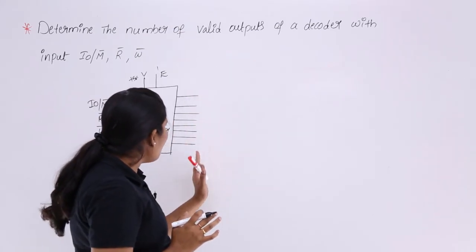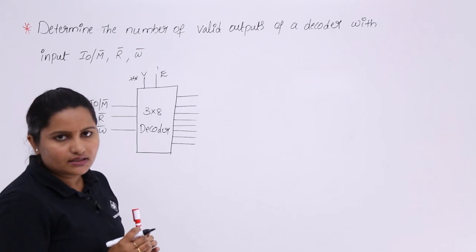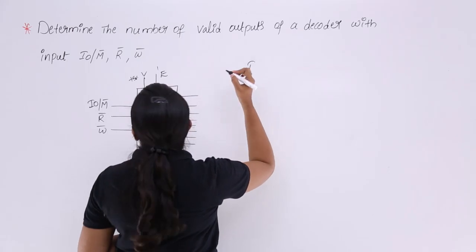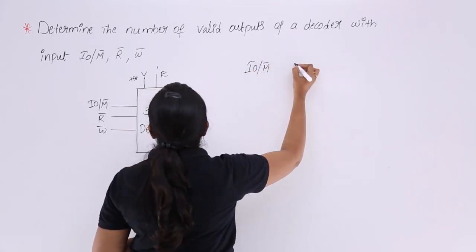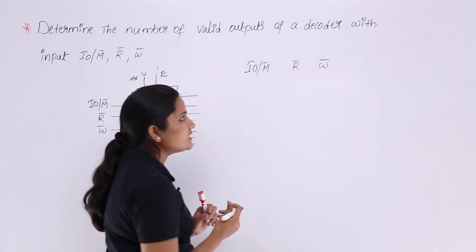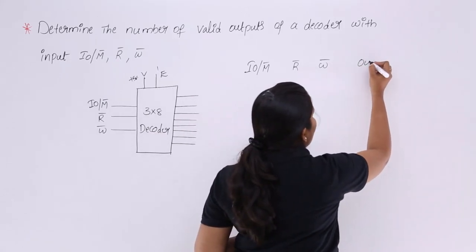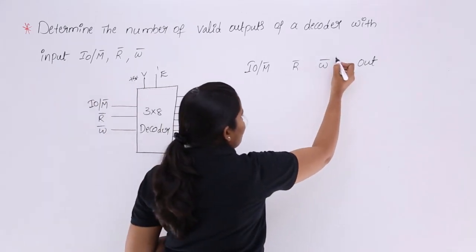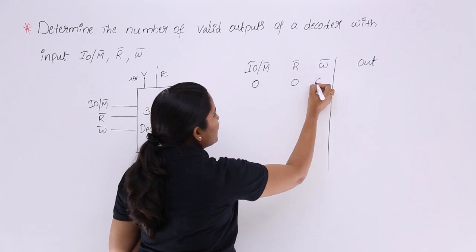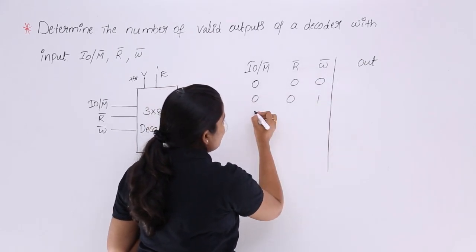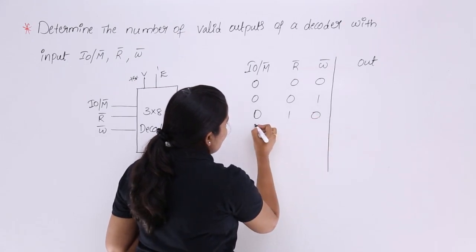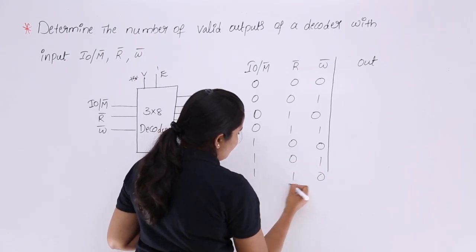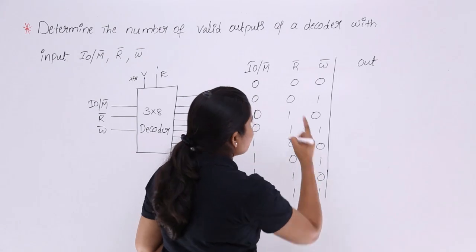Now, how many of these 8 outputs are valid? We need to determine that. With 3 input variables, we get a total of 8 combinations: 000, 001, 010, 011, 100, 101, 110, and 111. These are all 8 combinations with these 3 input variables.